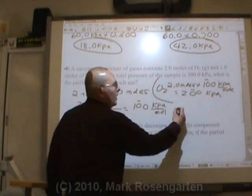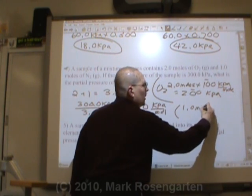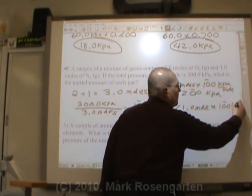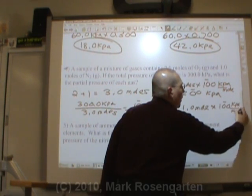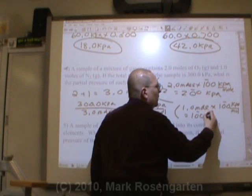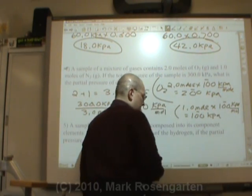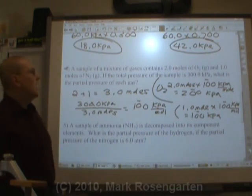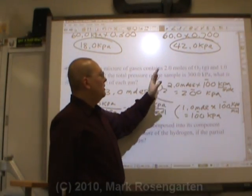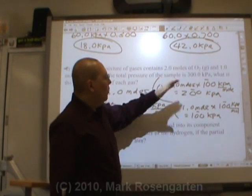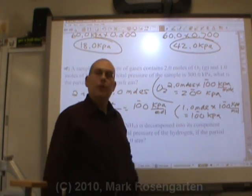For the nitrogen, it's 1.0 mole times 100 kPa per mole. Well, that comes out to 100 kPa. And that accounts for our 300 kPa. Oxygen makes up 2 thirds of it, makes up 2 thirds of the pressure too. Nitrogen makes up 1 third of the gas, it'll exert 1 third of the pressure.